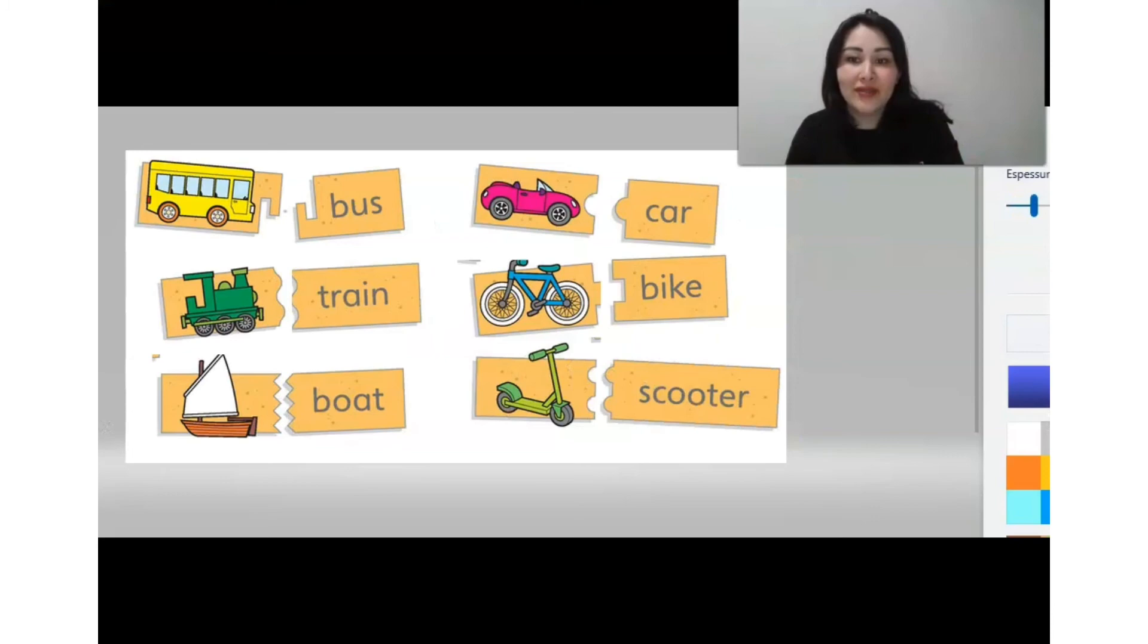So, look. Here we have a bus. It connects. Here we have a train. A boat. A car. A bike. And a scooter. They all connect together. All right?